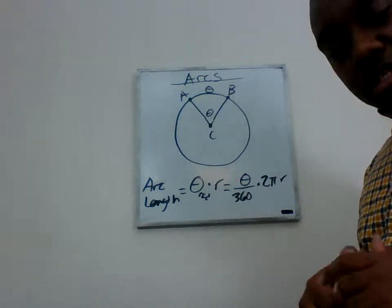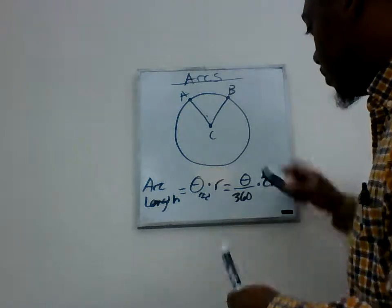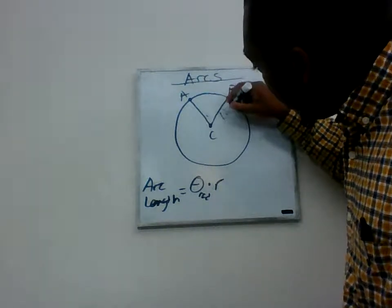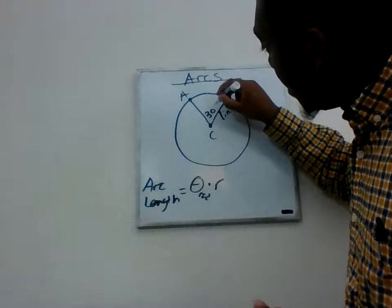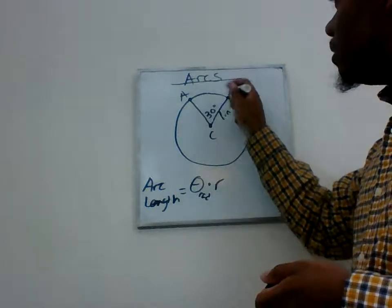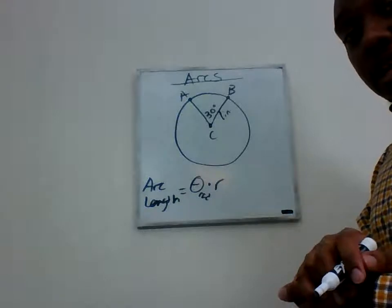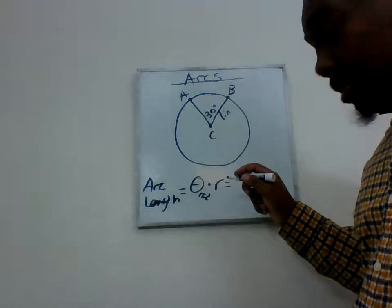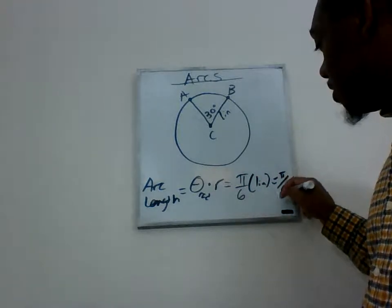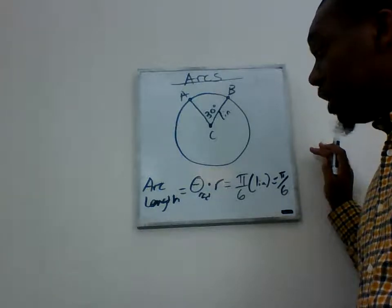Let's actually use it. We're going to find the arc length. Let's say the radius is 1 inch and the central angle is 30 degrees. Arc length equals the angle in radians times the radius. 30 degrees converts to π/6, so arc length equals π/6 times 1 inch, which gives π/6 inches. That's all we need to do.